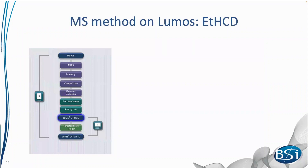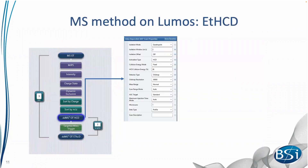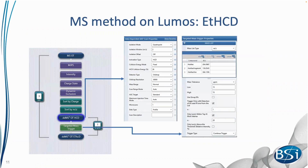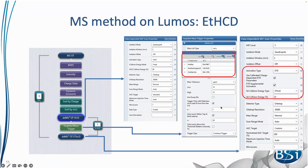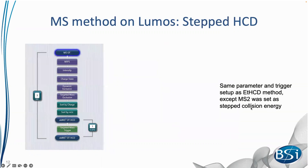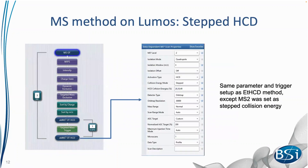The first method tested on our Lumos instrument was the ETHCD method. It uses a first round of HCD, followed by a target mass trigger — if fragmentation ions corresponding to glycan oxonium ions are identified, those precursors are then sent for ETHCD fragmentation with a collision energy of 25%. We also tested a straight HCD method using stepped collision energies of 20%, 30%, and 40% for each precursor ion.